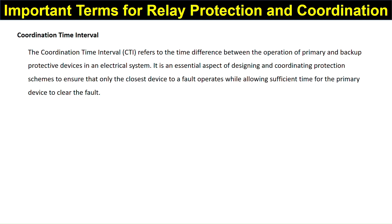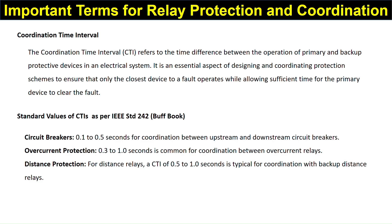Coordination Time Interval, or CTI, refers to the time difference between the operation of primary and backup protective devices. It ensures that only the closest device to a fault operates while allowing sufficient time for the primary device to clear the fault. Standard values as per IEEE Standard 242 (Buff Book): circuit breakers 0.1 to 0.5 seconds; overcurrent protection 0.3 to 1.0 seconds; distance protection 0.5 to 1 second for backup distance relays.